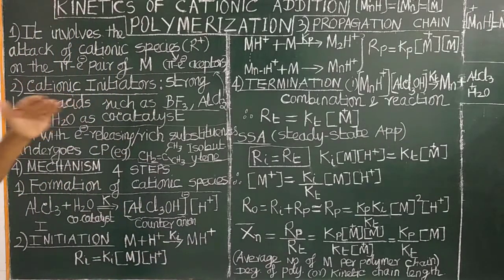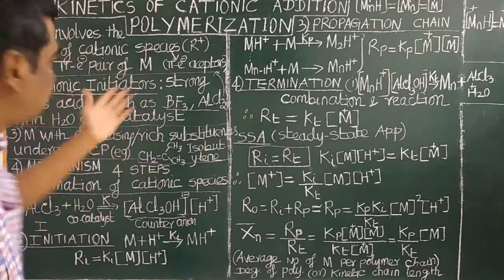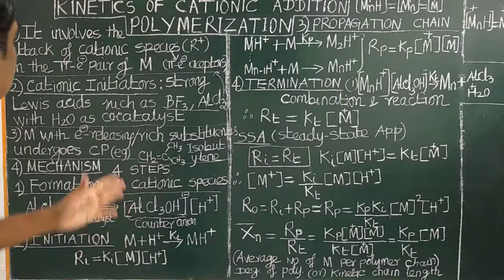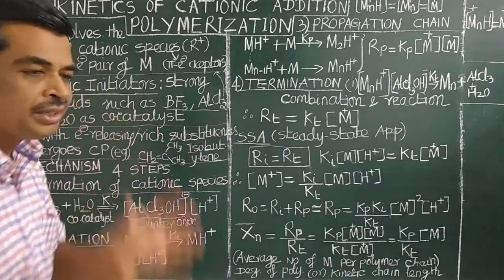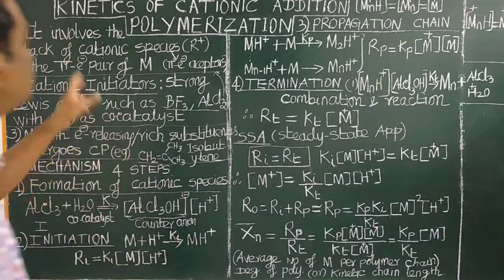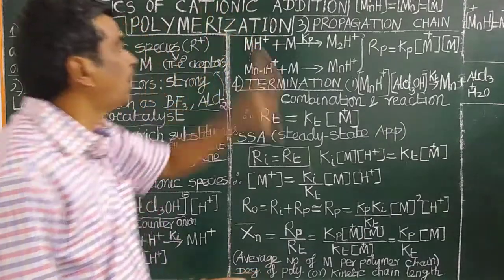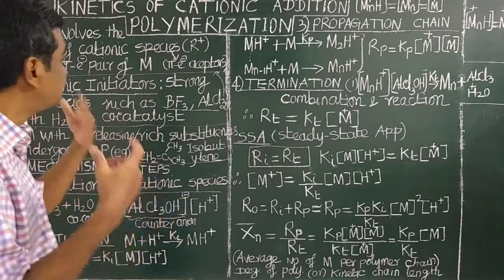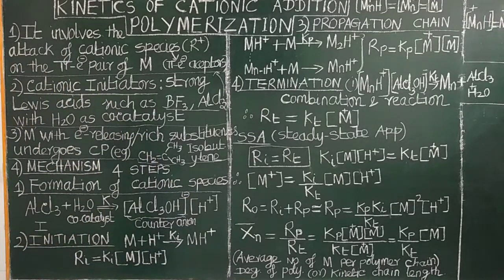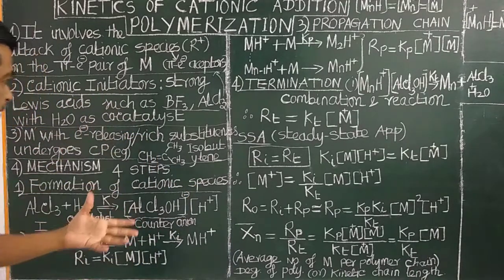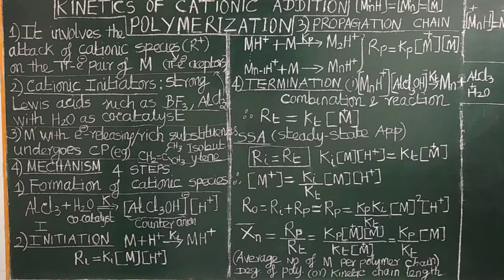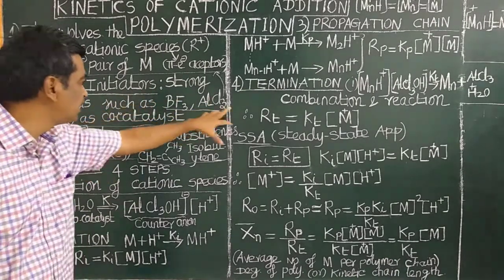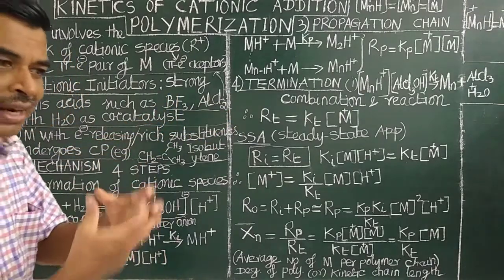Similar to free radical initiators, cationic initiators are required to initiate the cationic addition polymerization reaction. The cationic initiators are Lewis acids, such as BF3 and AlCl3. Lewis acids are called cationic initiators because they are electron pair acceptors.